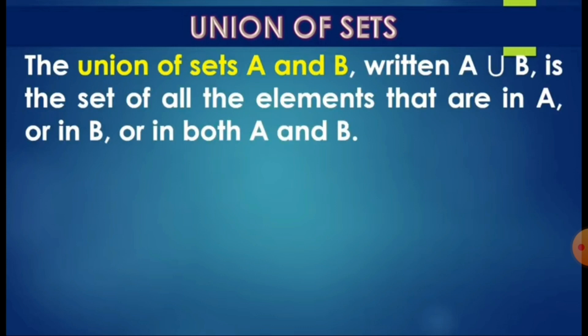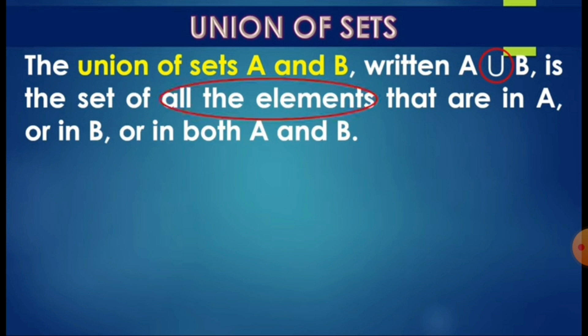Another set operation: we have the union of sets. The union of set A and B is written with the symbol that looks like a U. It is the set of all elements that are in A, or in B, or in both A and B. Which means all the elements of A and B are combined. From the word 'union,' it means to unite or to combine.